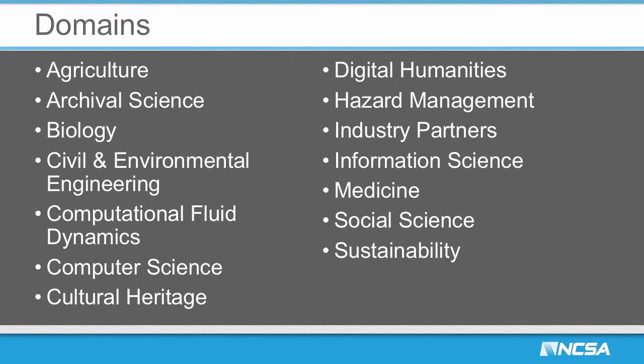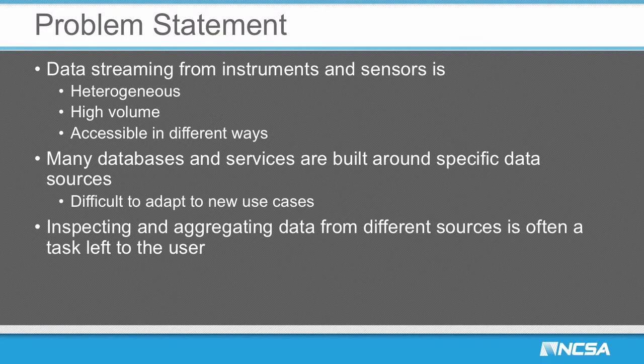The problem statement we're looking at today is the deluge of data streaming from instruments and sensors. The main challenges are that the data is heterogeneous, often high volume, and accessible in different ways — how you go and get data from different sources varies quite a bit. Many existing solutions are very specific to particular data. One of the things we've been tackling is how to aggregate data from different sources and make it easy for end users to inspect and make sense of this data.